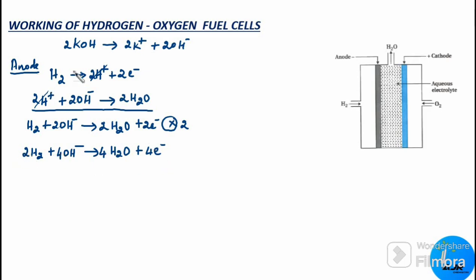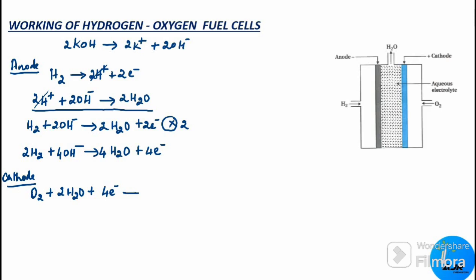Now let us see what is happening in the cathodic compartment. When oxygen is passed through the cathode in the presence of two molecules of water, it accepts four electrons: O₂ + 2H₂O + 4e⁻ → 4OH⁻.